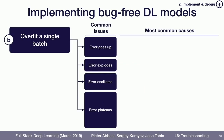There are a few ways that can fail. Instead of going to zero, your error could go up. Or your error could go down for a while and then explode. Or your error could oscillate — go down and go up and then go down and go up. Or your error could plateau, going down to 0.01 and never getting any lower than that.